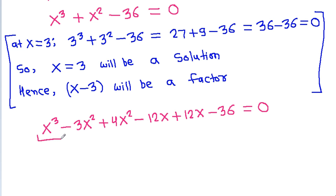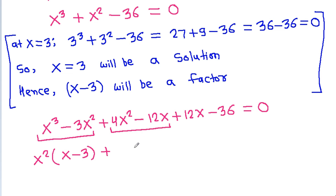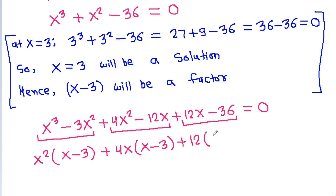Then, x cubed minus 3x squared is x squared times (x minus 3), plus 4x squared minus 12x is 4x times (x minus 3), plus 12x minus 36 is 12 times (x minus 3), that is equal to 0.